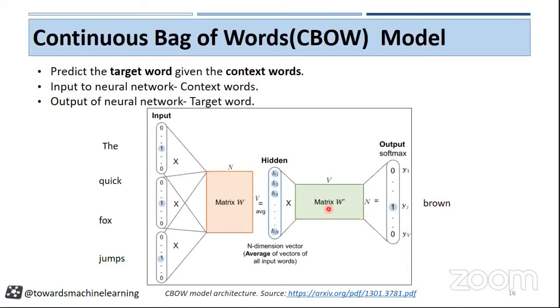And then we will multiply this hidden vector with our W dash vectors. And here, our output vector, we will get the output vector. And here our aim is to get one value at an index of brown.